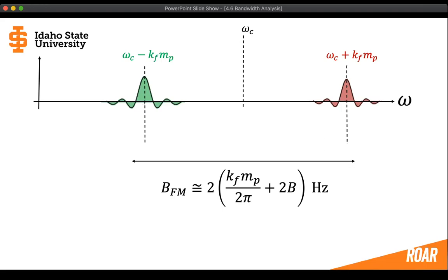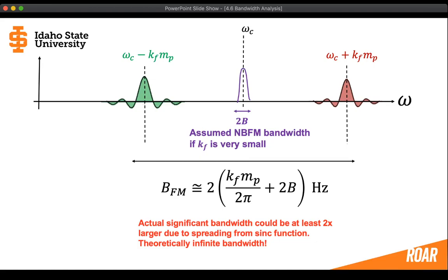This overall approximation in hertz is given in the box at the very bottom. Now, we originally thought that for a narrowband signal the bandwidth was only going to be 2b — the narrowband frequency modulated bandwidth approximation. If kf was very very small, we thought the bandwidth would be 2b. But we can now see that our staircase approximation tells us the actual significant bandwidth could be almost, or at least, two times larger than the narrowband approximation. And because these sinc pulses have a response from minus infinity to infinity, theoretically the staircase approximation has an infinite amount of bandwidth.